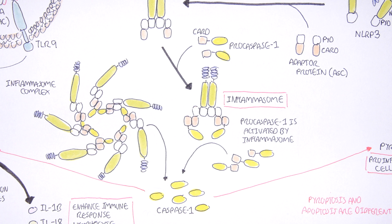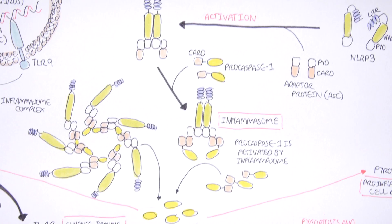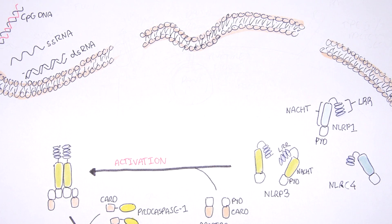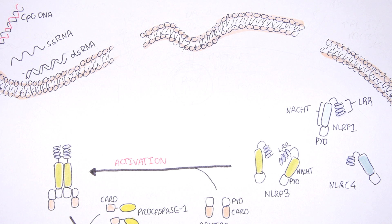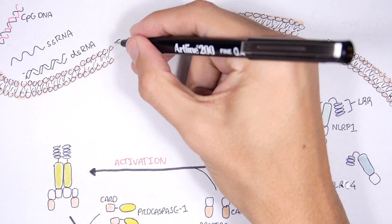How does the inflammasome get activated? The NLRP3 inflammasome is formed in response to a diverse amount of pathogen-associated molecular patterns (PAMPs) as well as danger-associated molecular patterns (DAMPs), and changes in the ion gradient across the cell. Let's have a look at some examples.